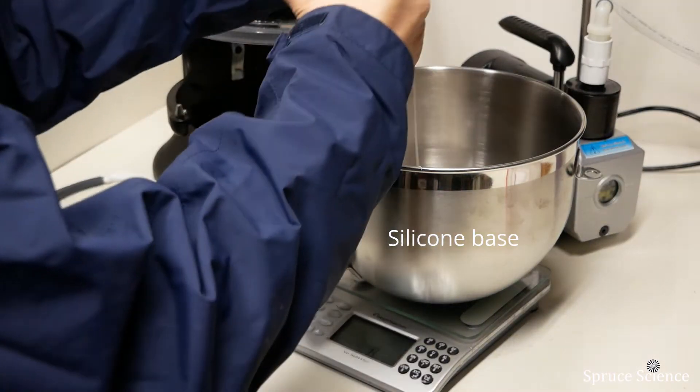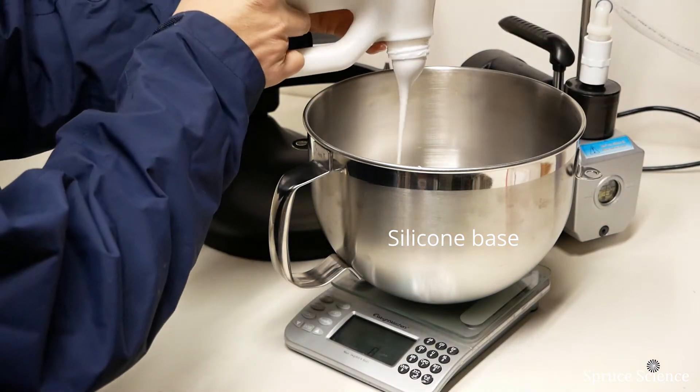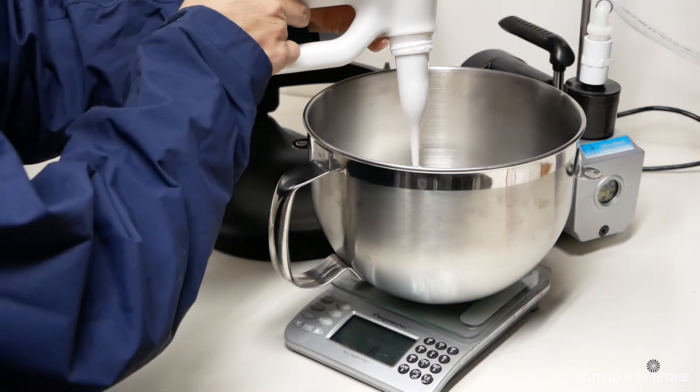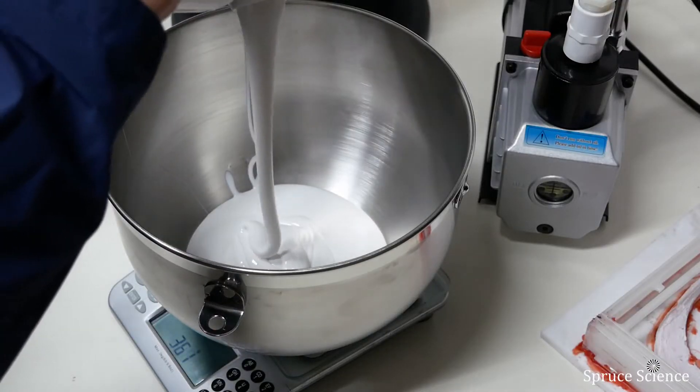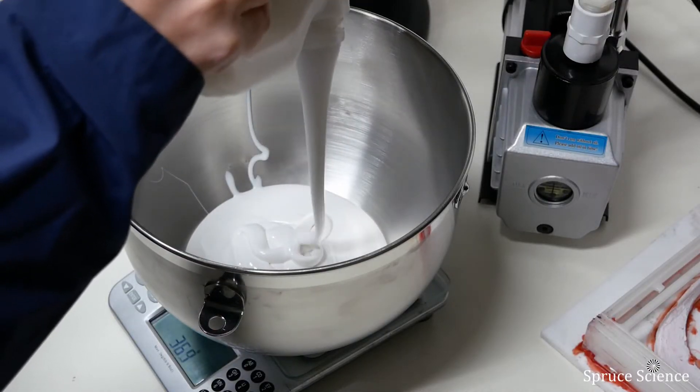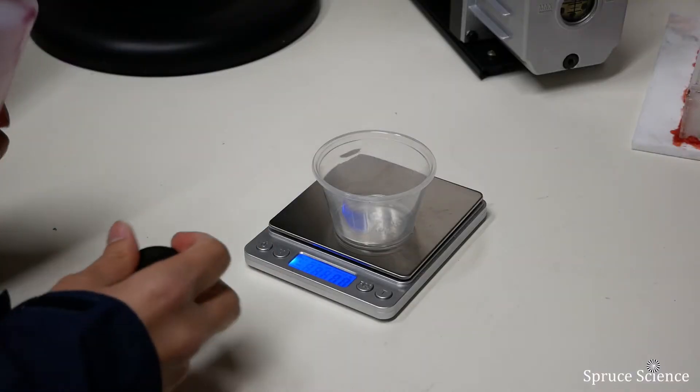People often work with two component systems such as silicone and epoxy. When you are working with these polymers, it is important to mix the base and curing agent completely for proper curing and cross-linking.